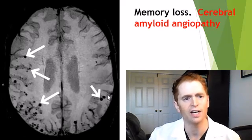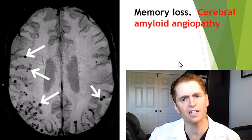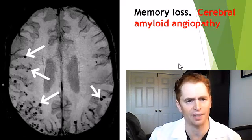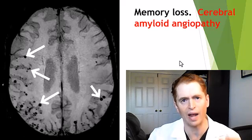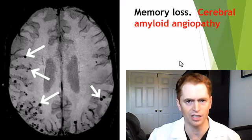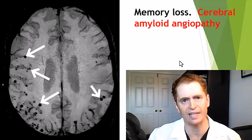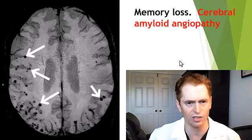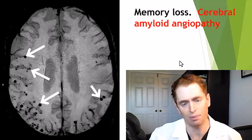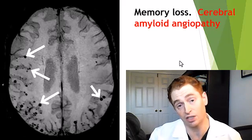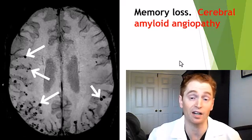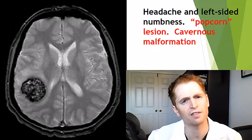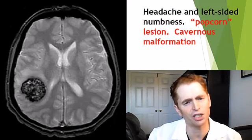This MRI for memory loss shows tiny areas of old micro-hemorrhages — each little dot is old blood. This is consistent with cerebral amyloid angiopathy, very closely related to Alzheimer's disease, where amyloid plaques get into the neurons of the brain. They can also invade the blood vessels and cause bleeding, sometimes leading to clinical syndromes, or sometimes being completely clinically silent.